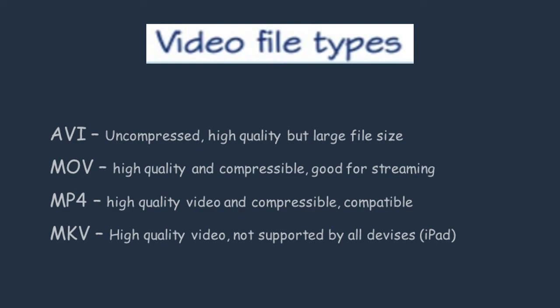The next one is MOV, which allows for high quality videos and is compressible, making it good for streaming videos and movies. The next one is MP4, which also allows for high quality videos and is compressible, meaning the file sizes might be smaller. Another benefit of MP4 is that it's highly compatible with different types of devices. The last one is MKV, which allows for high quality video but isn't supported by all devices — for example, MKV file types cannot be used on iPods.